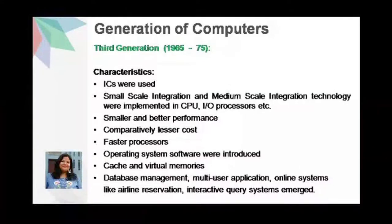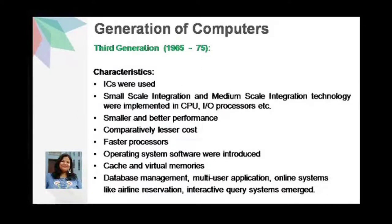The third generation of computers started from 1965 and lasted till 1975. An example of computers in this generation is the IBM 360 mainframe. The main characteristics are that ICs were used in place of transistors. Small-scale integration and medium-scale integration technology were implemented in the CPU and input-output processors. These computers were smaller, gave better performance, with comparatively lesser costs and faster processors. Operating system software was first developed in this generation, and cache and virtual memories were also introduced.